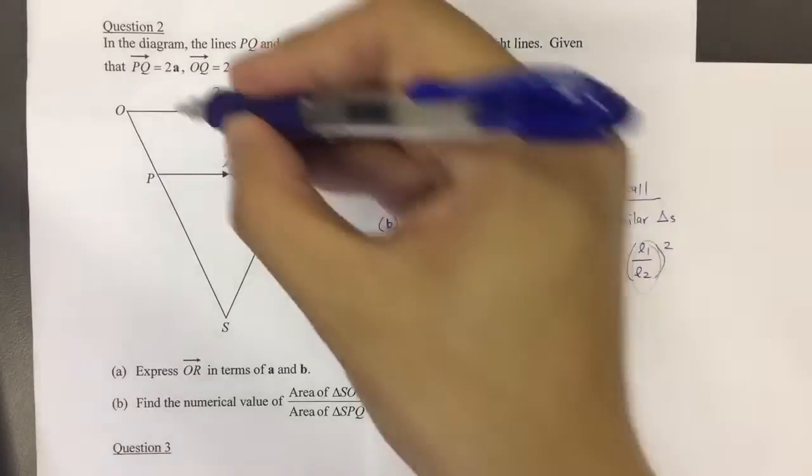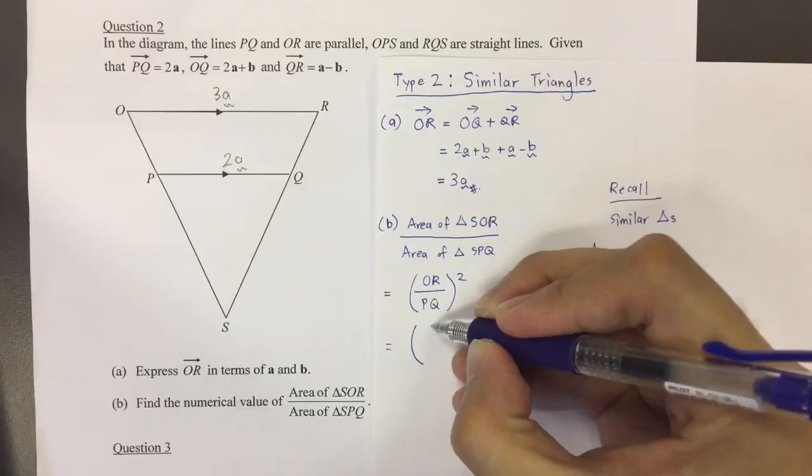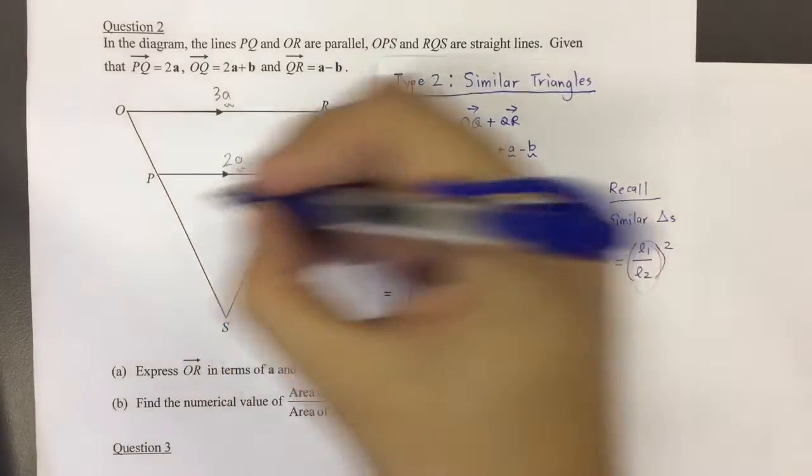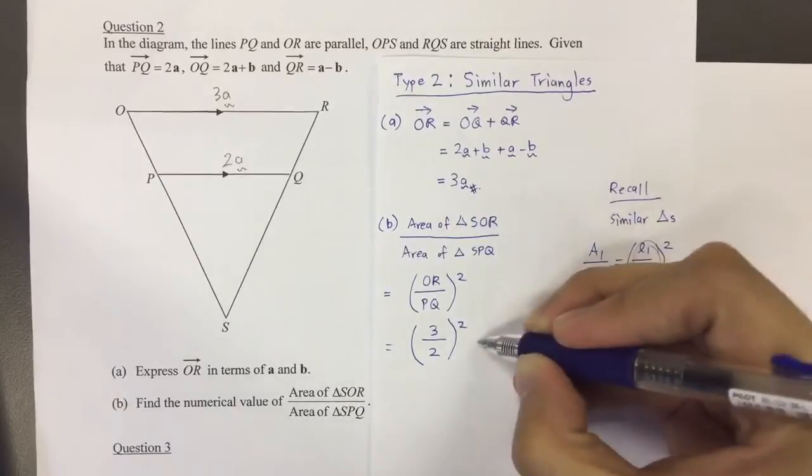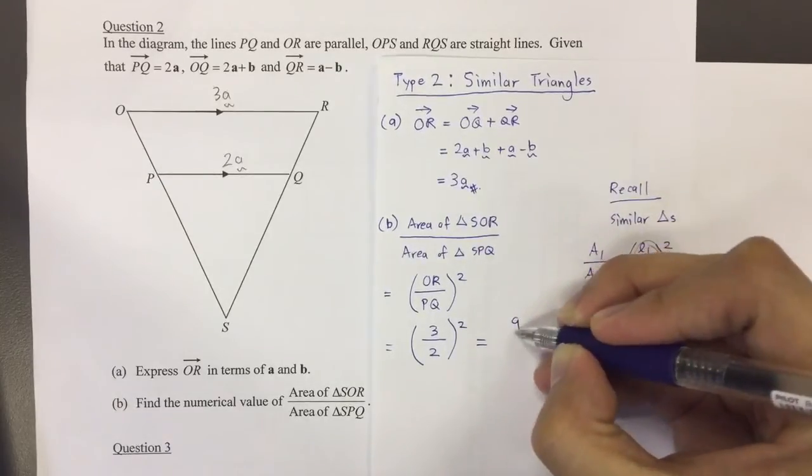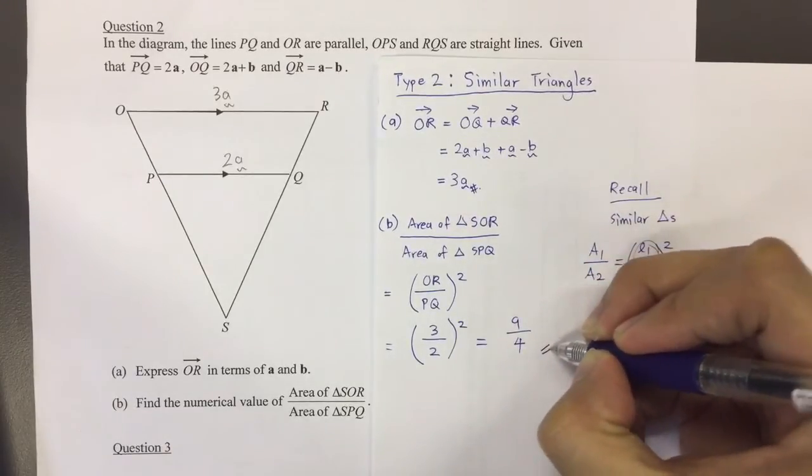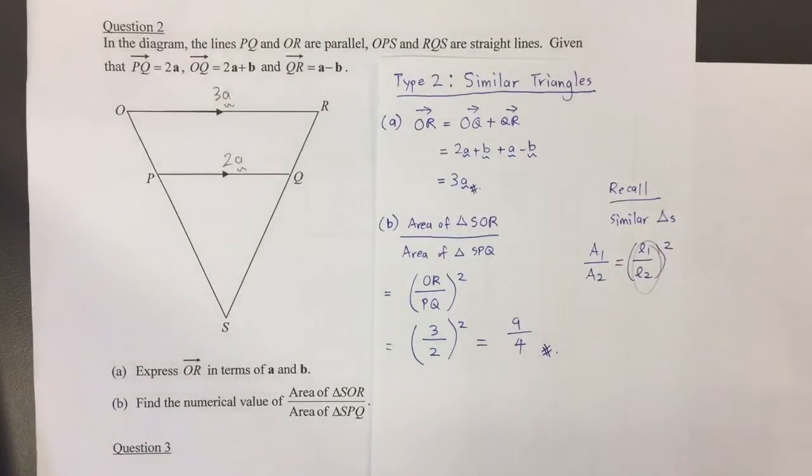So OR basically is talking about 3 units on top, and PQ is talking about 2 units below. So all things squared. Eventually, I'll get answer of 9 over 4. That's the answer.